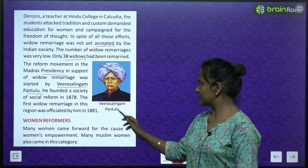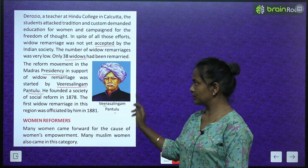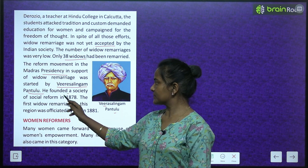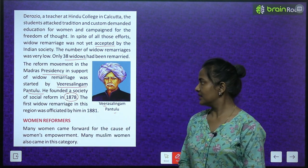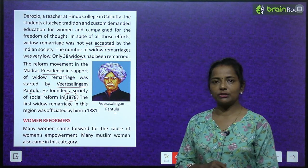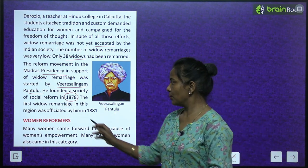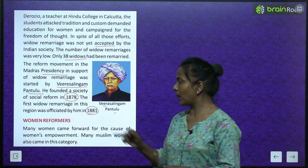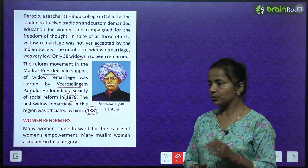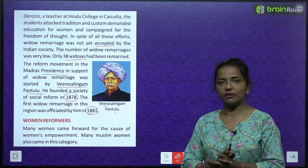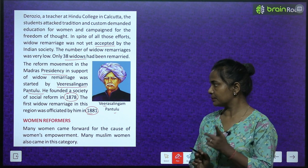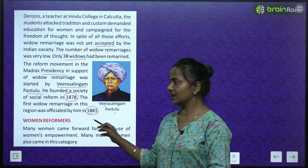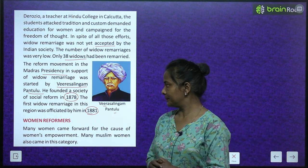The reform movement in the Madras Presidency in support of widow remarriage was started by Veer Salingam Pantulu. He founded a society of social reforms in 1878. The first widow remarriage in his region was officiated by him in 1881.